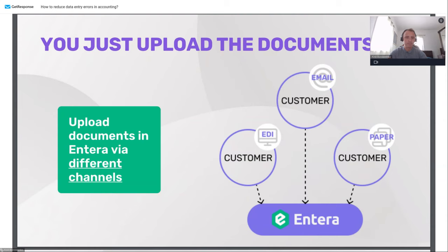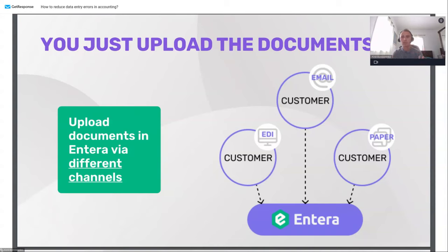Let's speak about the first step — uploading data. It can be done in different ways. For example, by email: you can forward your email with invoice attachments to Entera's email address, and Entera will take it and work automatically. Also, it can be done through the web user interface, where you can upload many documents at once — 100 documents at once or more. You can also work with hard copies: take a stack of documents, put them in your scanner, scan them all at once, and upload that one PDF to Entera — Entera will sort it out for you.